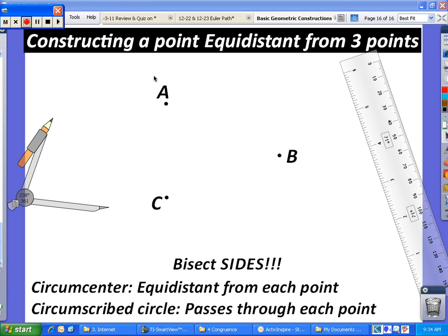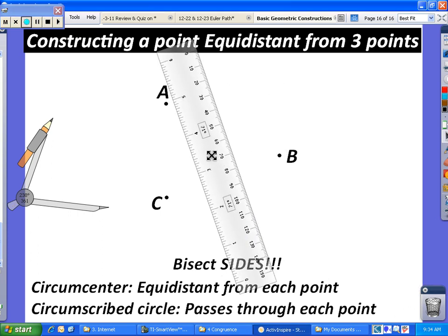For this construction, you want to make sure that you actually bisect the sides of the triangle. In this case, we're given points A, B, and C. And you want to go ahead now and bisect the sides of the triangle. So the first thing that we actually need is the triangle itself.